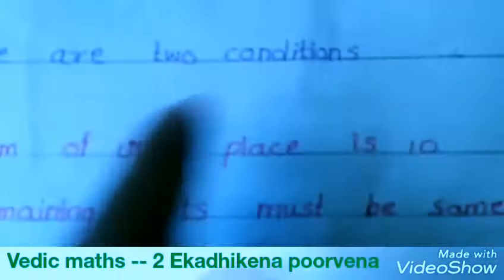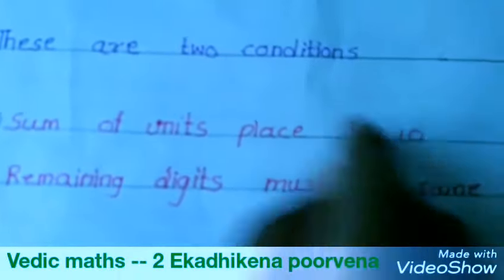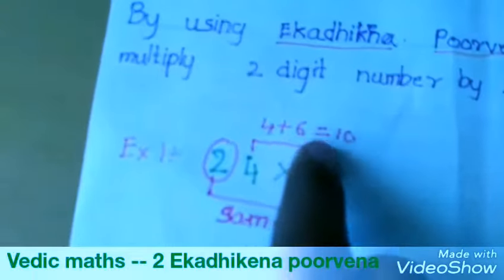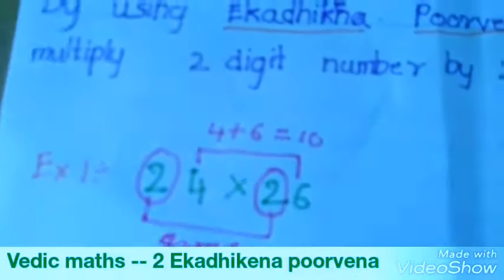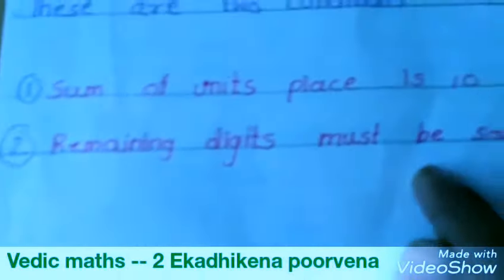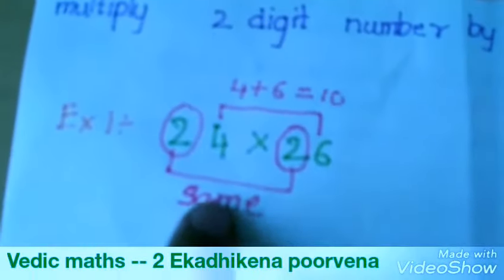These are two conditions. First, the sum of the unit digits is 10 — 4 plus 6 is equal to 10. Second, the remaining digits must be the same — 2 and 2 is same.